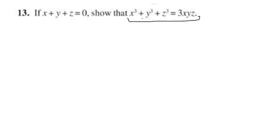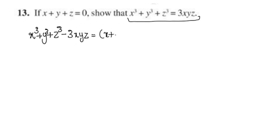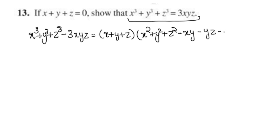We use the identity: x³ plus y³ plus z³ minus 3xyz is equal to x plus y plus z, into x² plus y² plus z² minus xy minus yz minus zx.